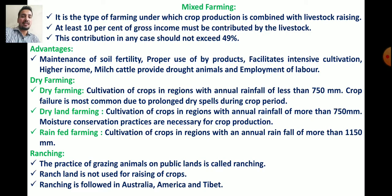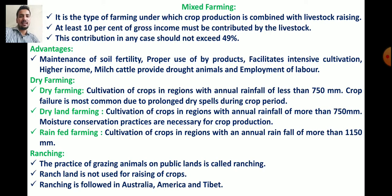Ranching is the practice of grazing animals — cattle, cows, buffalo, sheep, goat, etc. — on public lands. Ranch land is not used for raising crops. Ranching is practiced in Australia, America, and other regions. A likely exam question: 'Ranching is the practice of grazing animals on public lands.'